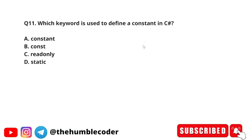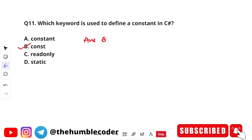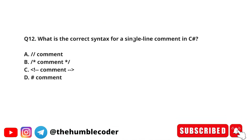Which keyword is used to define a constant in C sharp? The options are: A) constant, B) const, C) readonly, and D) static. The correct answer is option B — const. The const keyword is used to define a constant in C sharp.